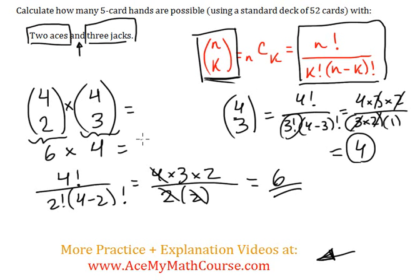Fantastic. And six times four is twenty-four. So there are actually only twenty-four five-card hands with exactly two aces and three jacks. That's it.